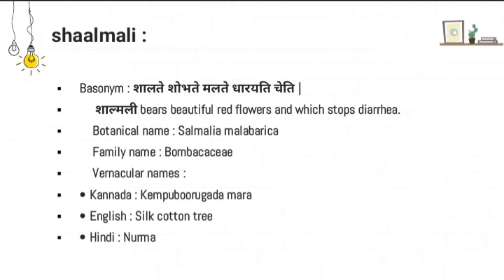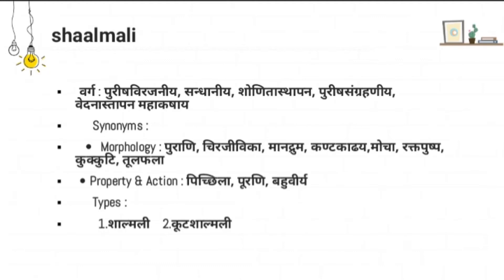In English it is called the Silk Cotton Tree. When the fruit of the Shalmali is dehiscent — in its dehiscent nature when it splits open — it emits silky cotton-like structures along with the seeds, that's why it is called the Silk Cotton Tree. In Hindi, it is called Nurma.